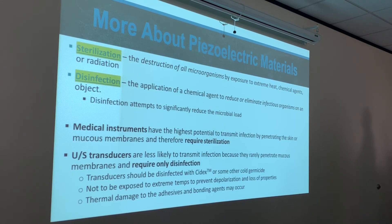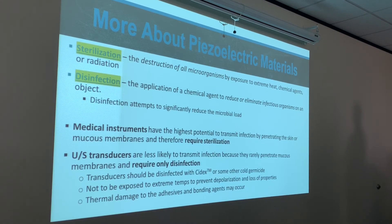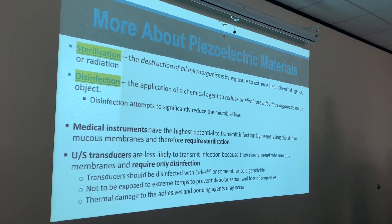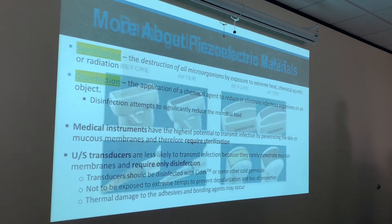Transducers should be disinfected with Cidex or another cold germicide. They should not be exposed to extreme temperatures to prevent depolarization and loss of properties — that's why we don't use the autoclave. Thermal damage to the adhesive and bonding agents may also occur; you may have seen the matching layer peeling up on a transducer — that's heat damage causing the adhesive to fail, which means we lose transducer properties faster.